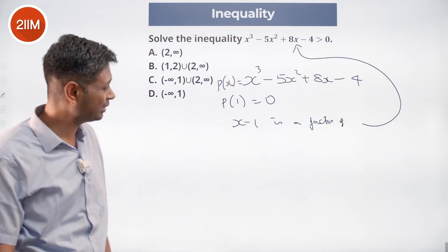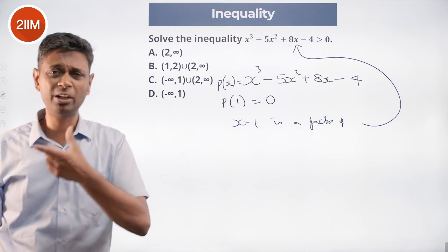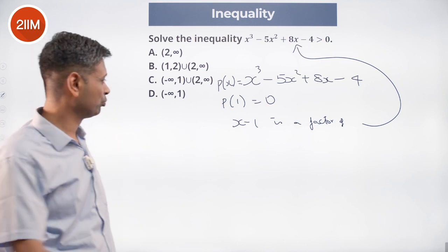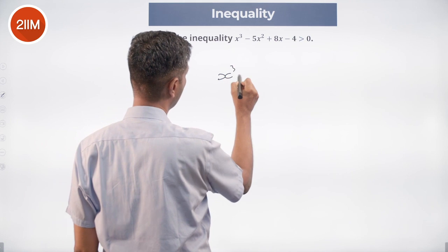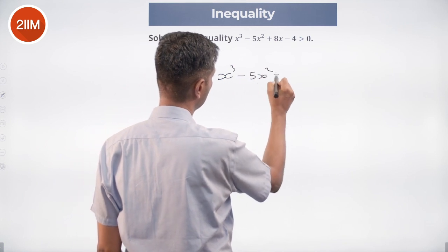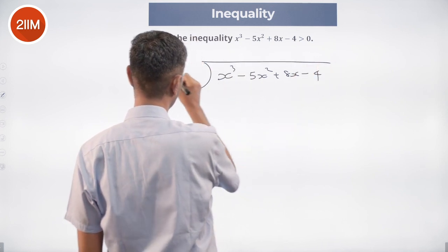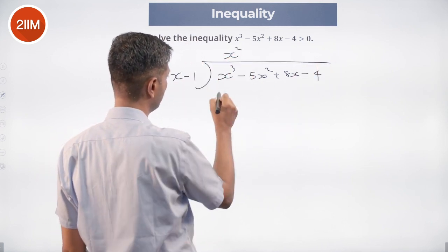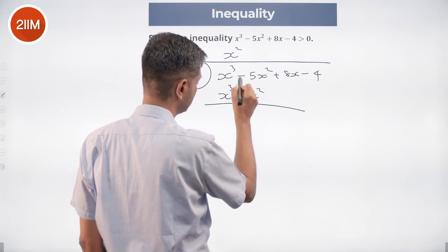x - 1 is a factor of that, so we can factorize it further. See what the remaining part is and deal with the quadratic separately. So x³ - 5x² + 8x - 4 divided by x - 1. This is x² that will go here. x³ - x² becomes subtractive.